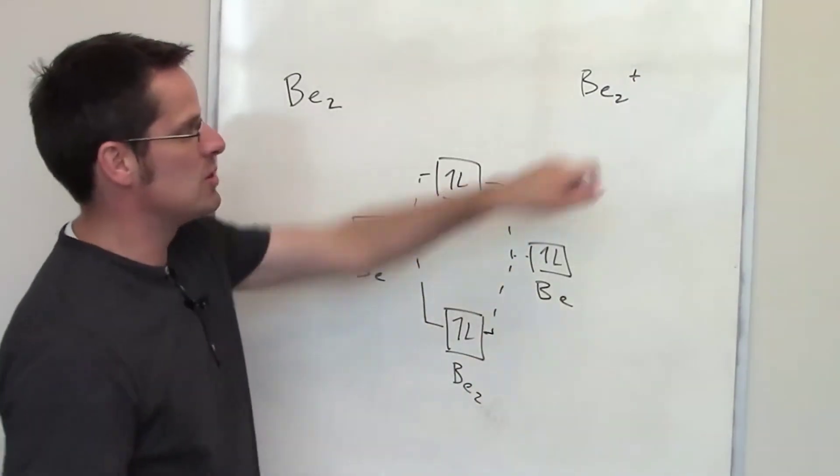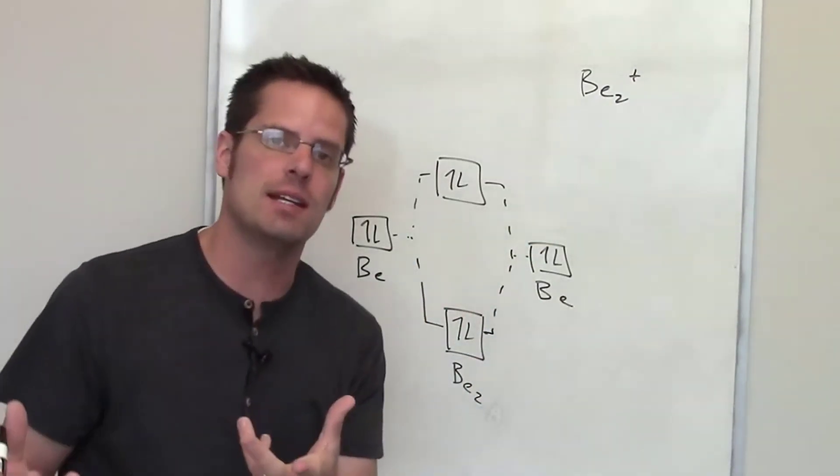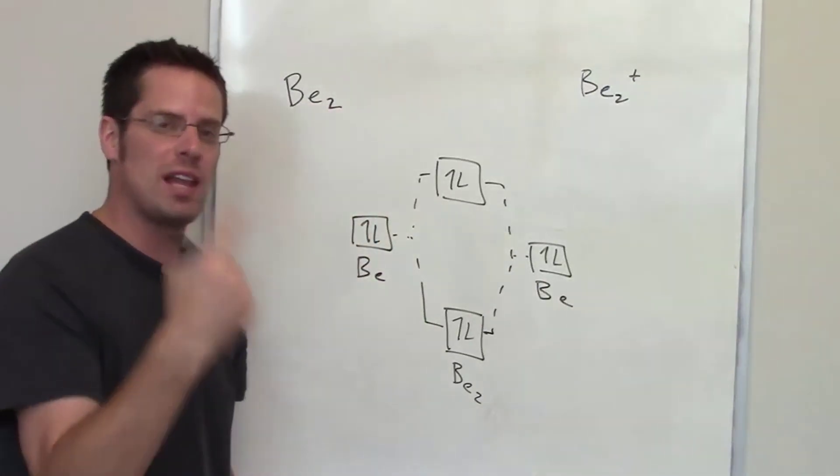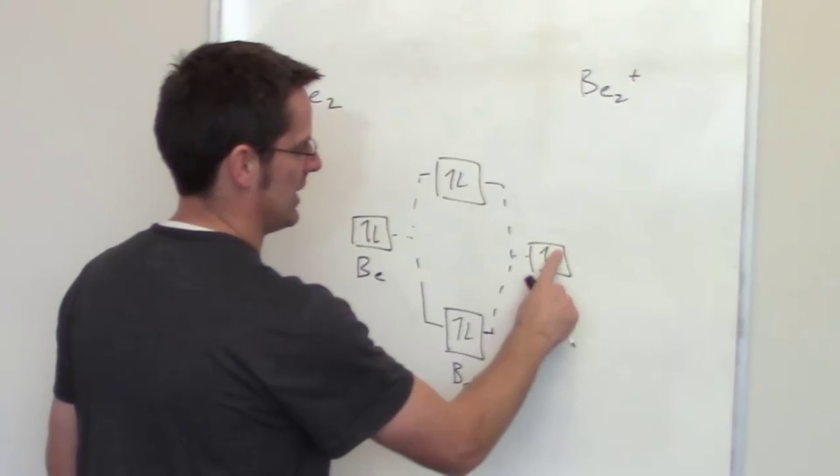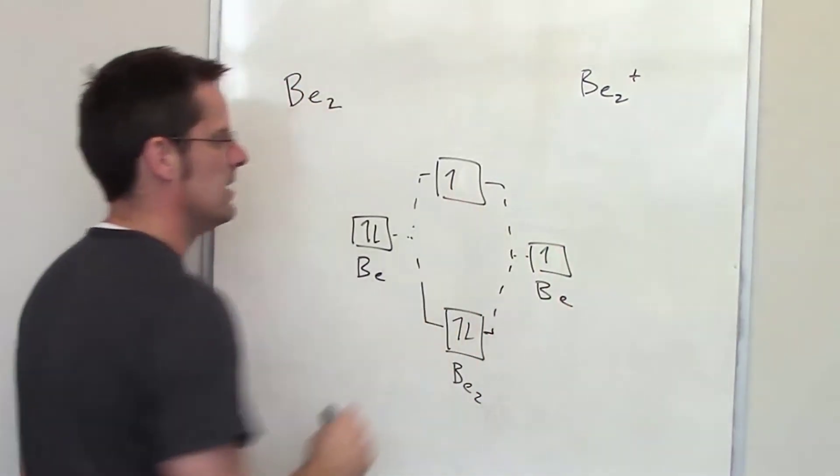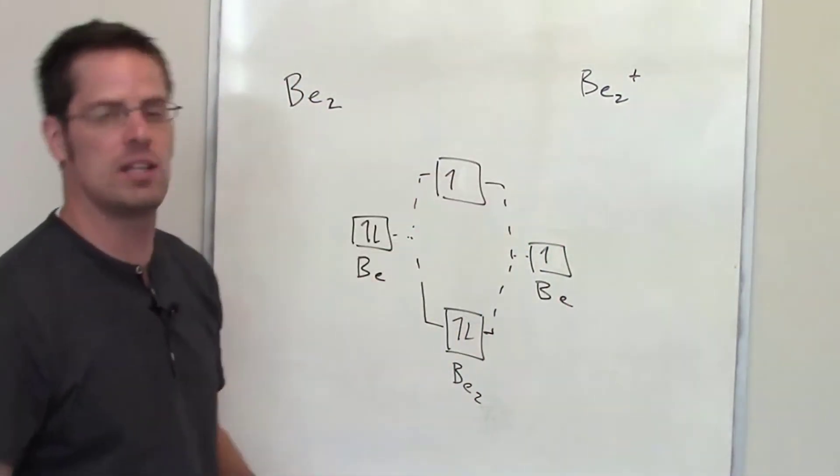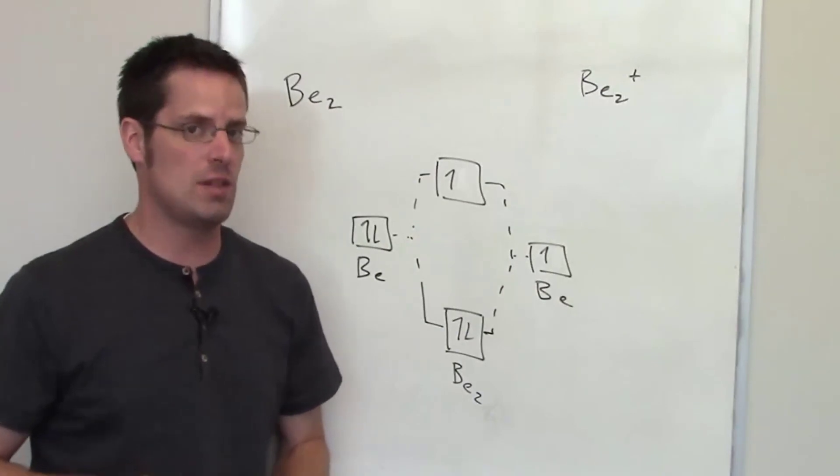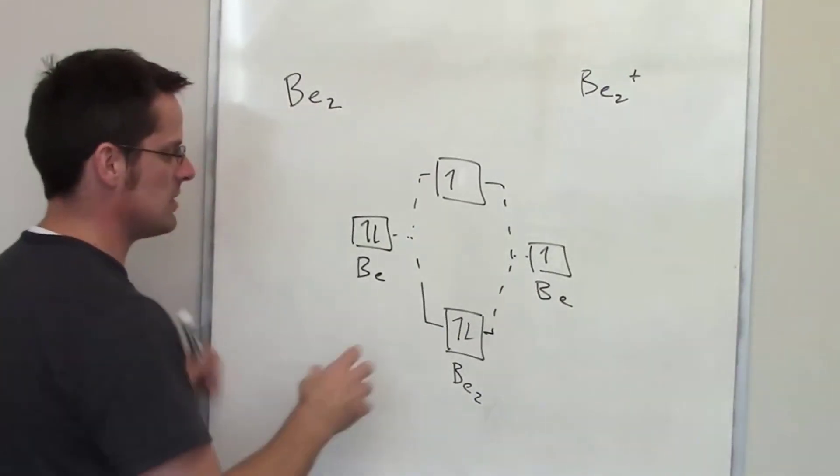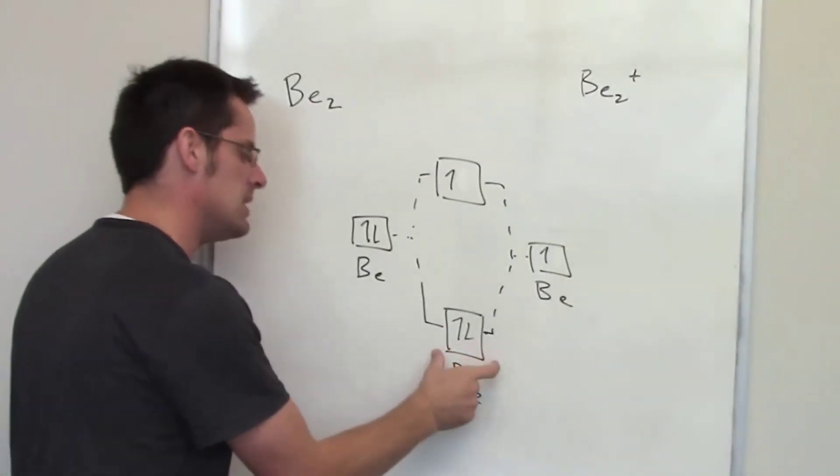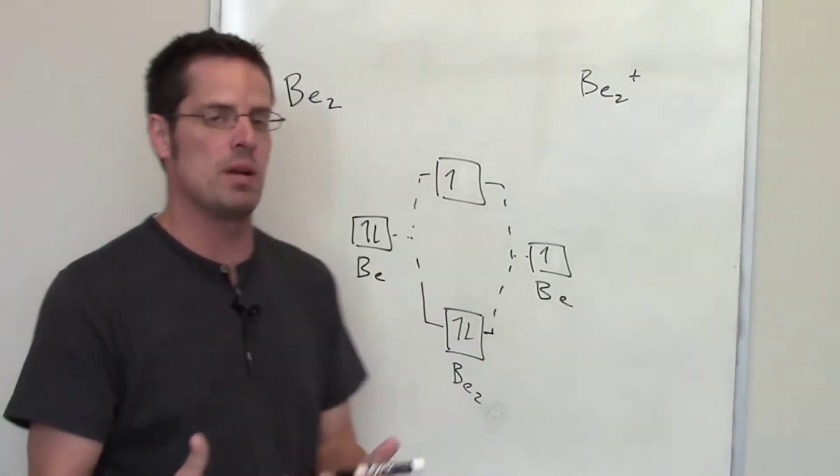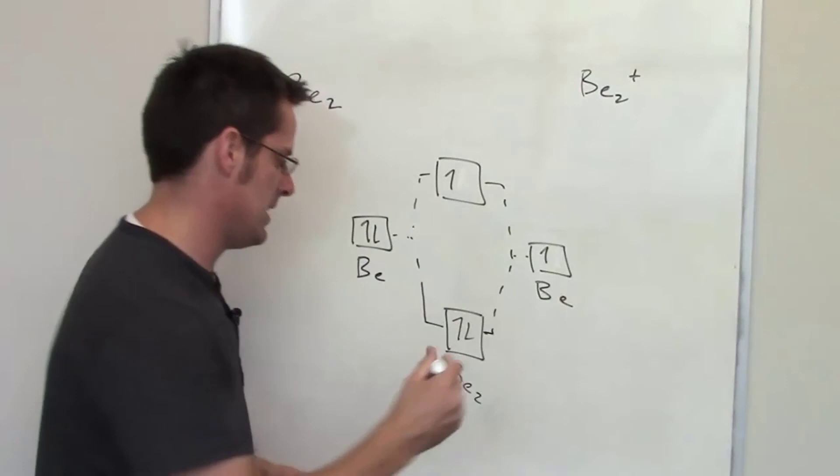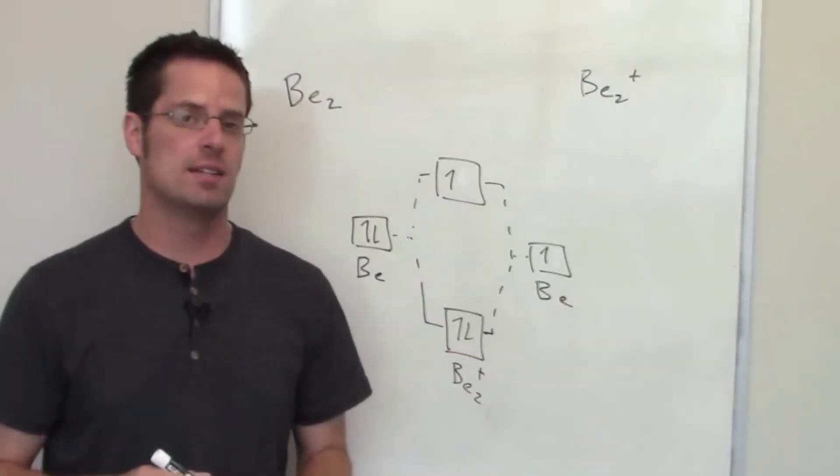Now, what about beryllium 2 plus? What does that plus mean? Well, it means that I've removed one electron from the system. It doesn't matter which one I pick. So I'll just remove this electron. Now, would we expect this molecule to exist? As it turns out, yes, we would. Because there are more electrons in the bonding molecular orbital than there are in the antibonding molecular orbital, this molecule can, in theory, exist, and in fact, actually does.